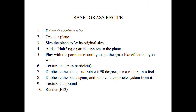Duplicate the plane and rotate it 90 degrees for a richer grass feel. Then duplicate the plane again and remove the particle system from it so the plane becomes the ground. Then texture the ground — the idea is perhaps you want the ground to look a little bit different than the grass plane. In this render, the ground is going to be brown and the grass will be green. Then render, which is F12.